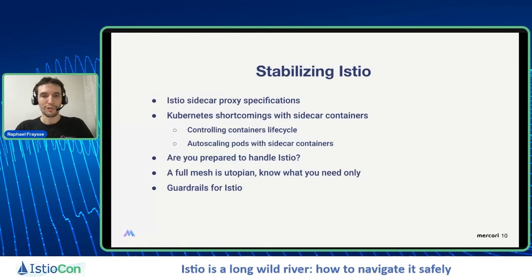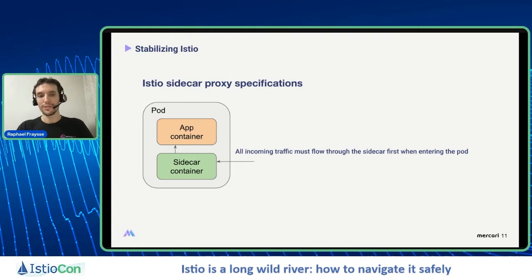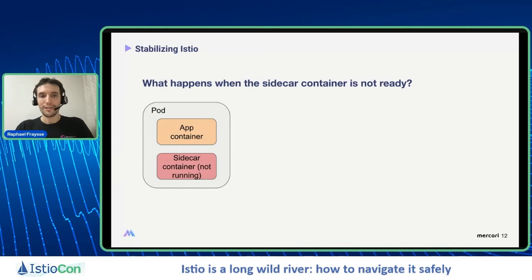Let's start with the Istio sidecar proxy specifications. We have a pod running in Kubernetes with two containers: an application container and a sidecar container. With Istio, all incoming traffic must flow through the sidecar first when entering the pod, and all outgoing traffic must flow through the sidecar before leaving the pod. So what happens when the sidecar container is not ready? Incoming traffic is sunk into the void, and outgoing traffic cannot leave the pod.